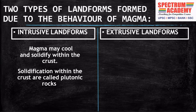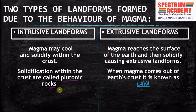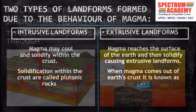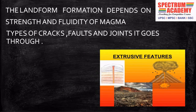The magma, while coming to the surface of the earth, may cool and solidify within the crust, and as a result it forms intrusive landforms. The solidification within the crust is known as plutonic rocks. When the magma reaches the surface and solidifies, it forms extrusive landforms. When the magma comes out of the surface of the earth, we call it lava. The landform formation depends on the strength and fluidity of the magma, the type of cracks, faults and joints it goes through inside the earth's crust.